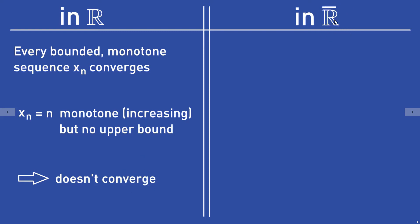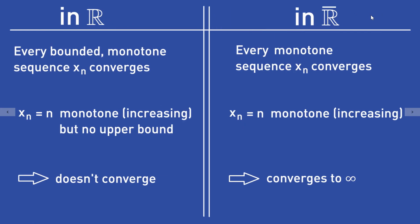In the extended real numbers, this theorem changes a little bit. It states: every monotone sequence Xn converges, which is quite nice, because we don't have to check the bounded condition — we can omit it in the extended real numbers. So the sequence Xn = n is monotonically increasing, and therefore it converges in the extended real numbers. In this case, it converges to the limit plus infinity, which is a number in the extended real numbers.